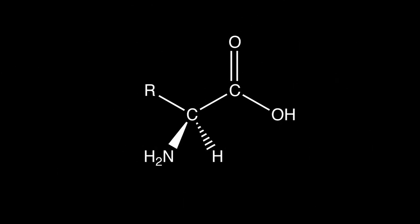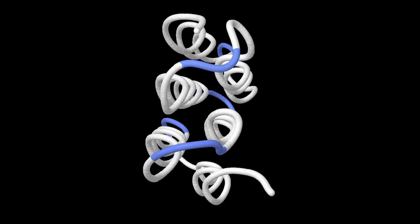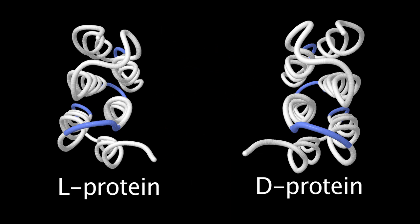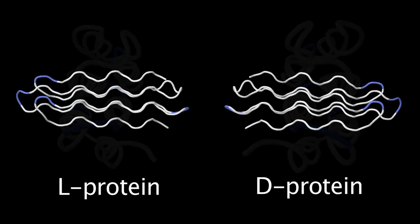Naturally occurring amino acids have an L configuration and combine to form L-proteins. However, scientists can now chemically synthesize proteins made up entirely of D-amino acids. These synthetic macromolecules are also known as D-proteins. Interestingly, these proteins fold into three-dimensional structures which mirror those of the naturally occurring L-protein counterpart.